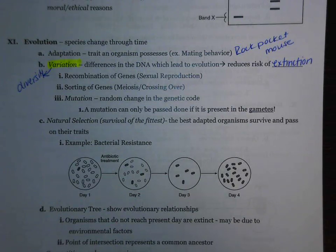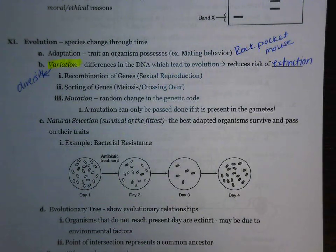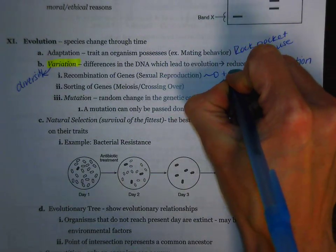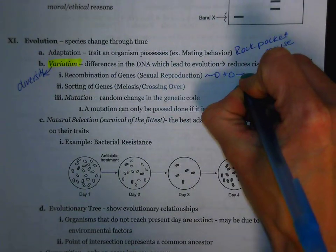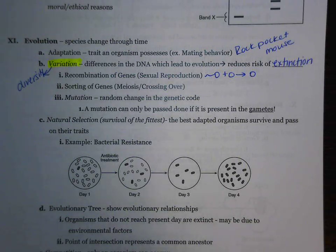So how do we get this variation? Well, there are three really important terms that we need to remember. The first one is going to be recombination of genes. Recombination of genes is just a fancy way to say sexual reproduction. When we're talking about sexual reproduction, we're talking about sperm and egg coming together, making a zygote. The next type we have is called the sorting of genes — that's just another way for us to say meiosis.